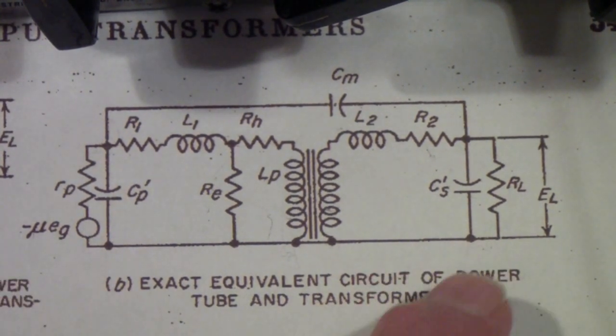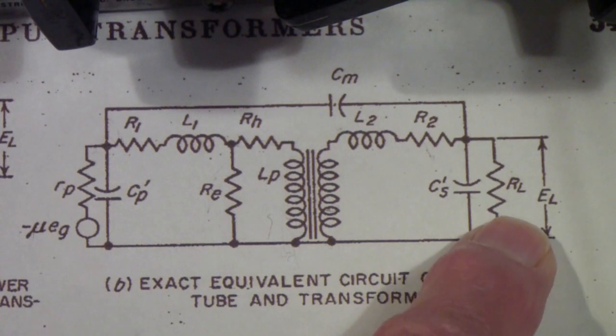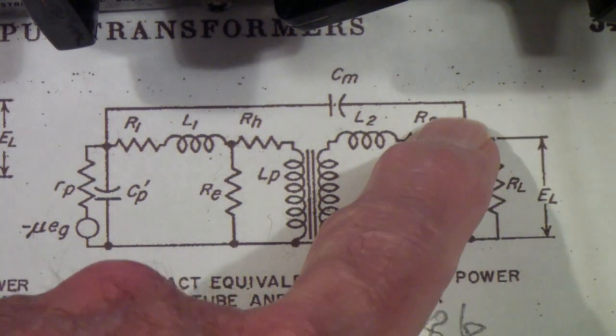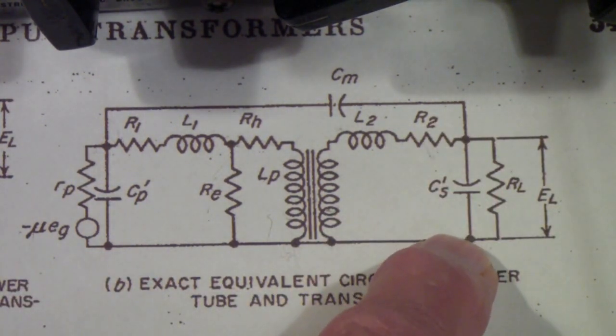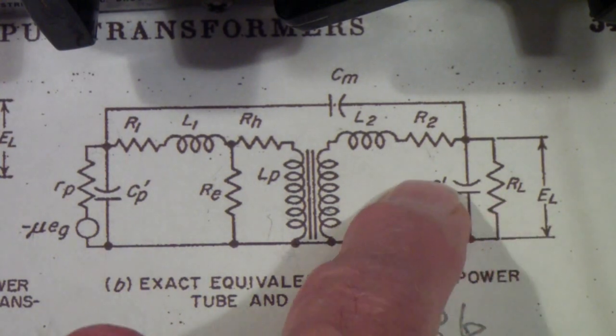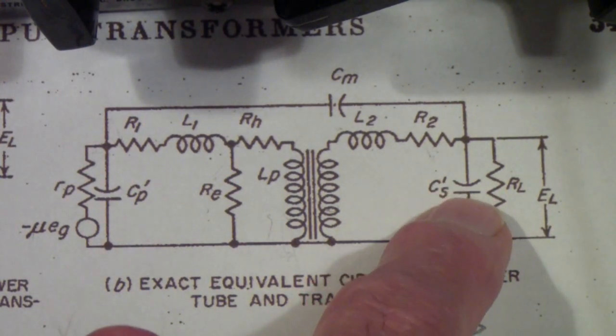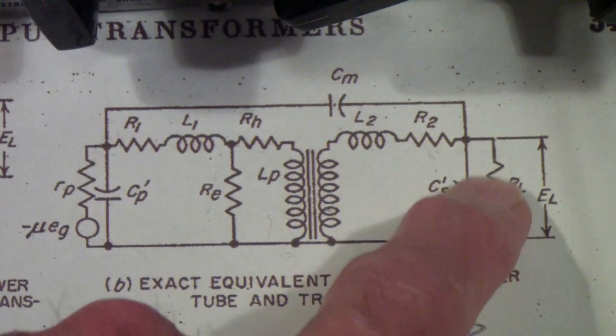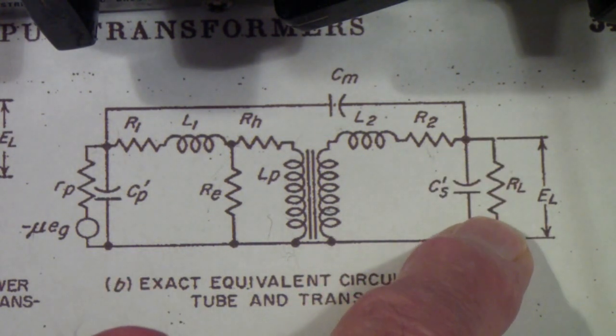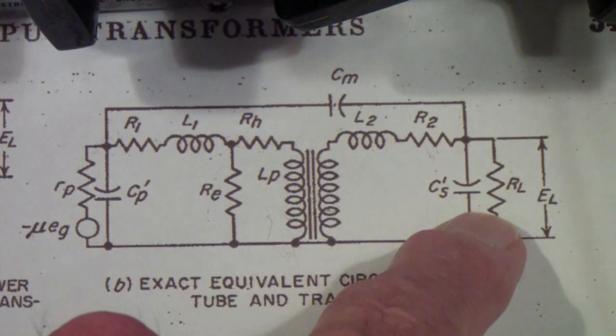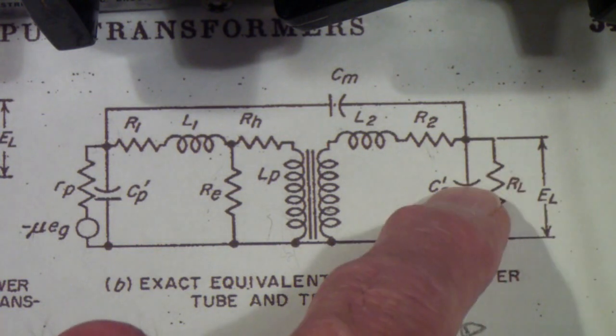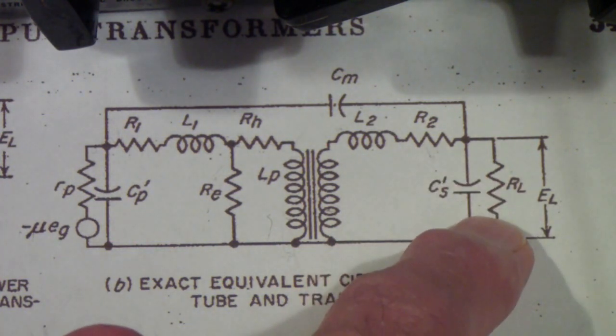To give you an idea, RL is the load. Normally, there's a little bit of capacitance associated with it. It's actually, in the case of a loudspeaker, pretty negligible. In the case of a loudspeaker, it's not just a pure resistance, it's actually an inductance itself, or an inductive reactance, which consists of a resistor in series with an inductor. But we'll talk about that a little bit later.